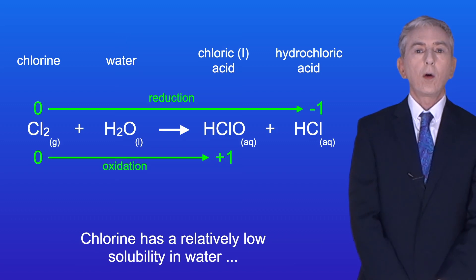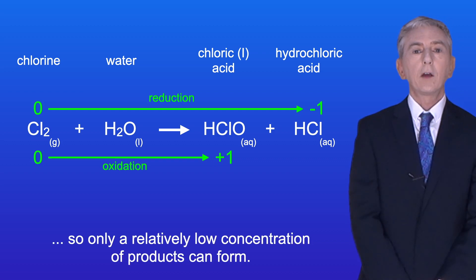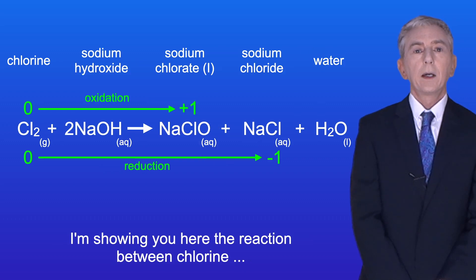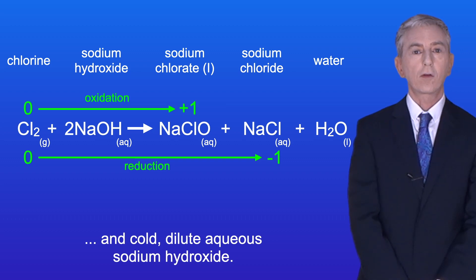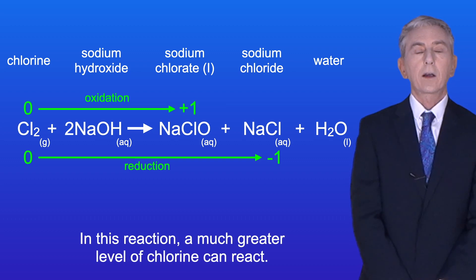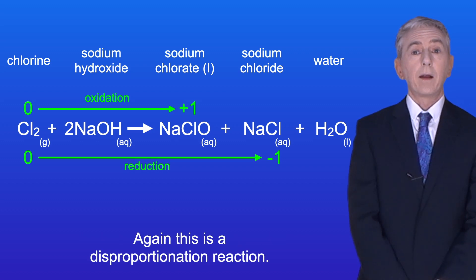Now chlorine has a relatively low solubility in water so only a relatively low concentration of products can form. I'm showing you here the reaction between chlorine and cold dilute aqueous sodium hydroxide. In this reaction a much greater level of chlorine can react and again this is a disproportionation reaction.